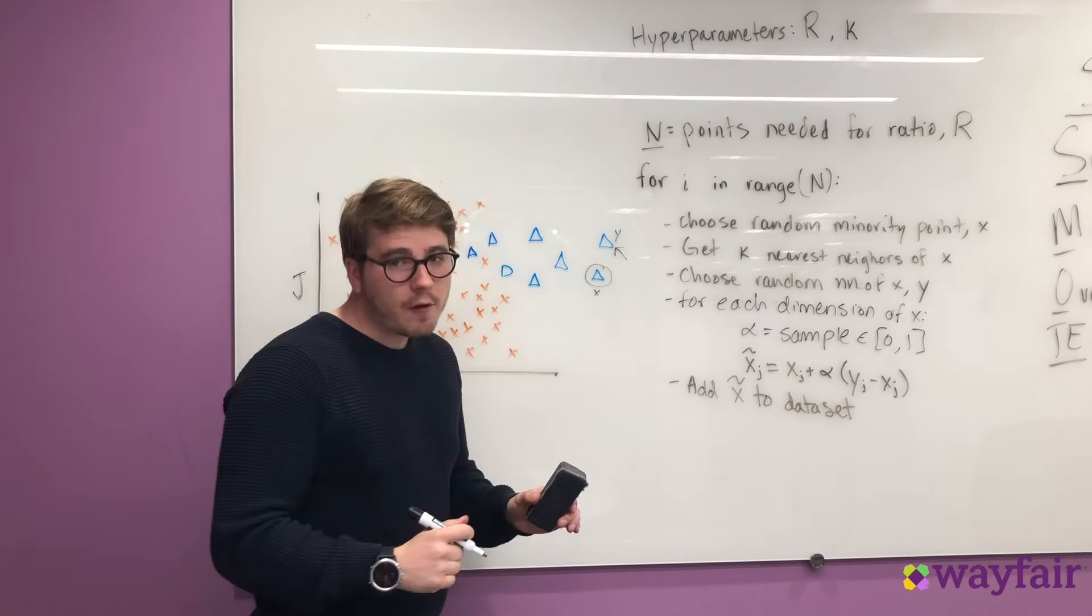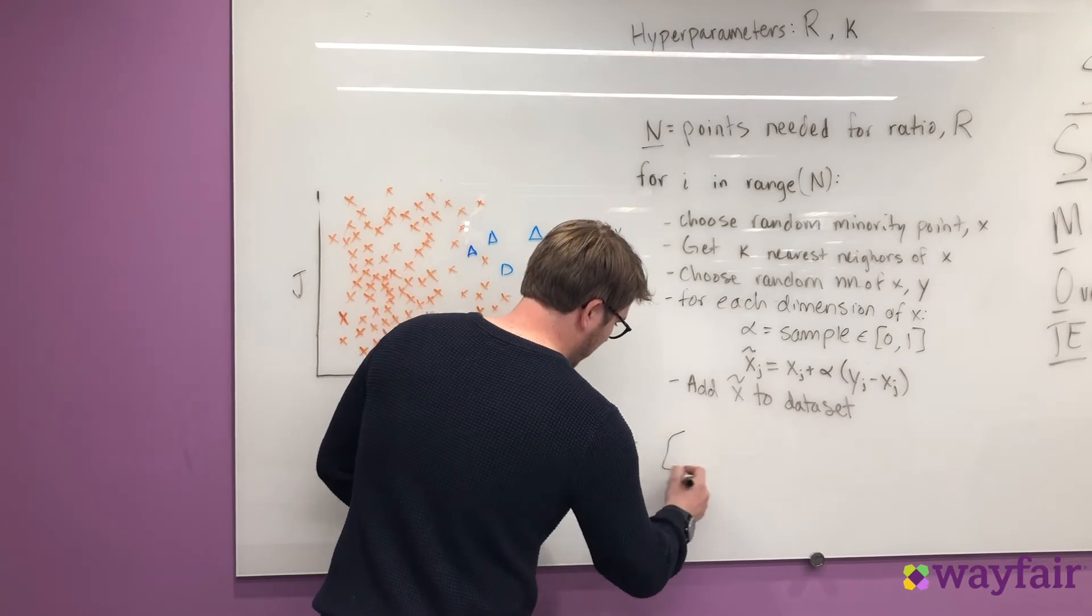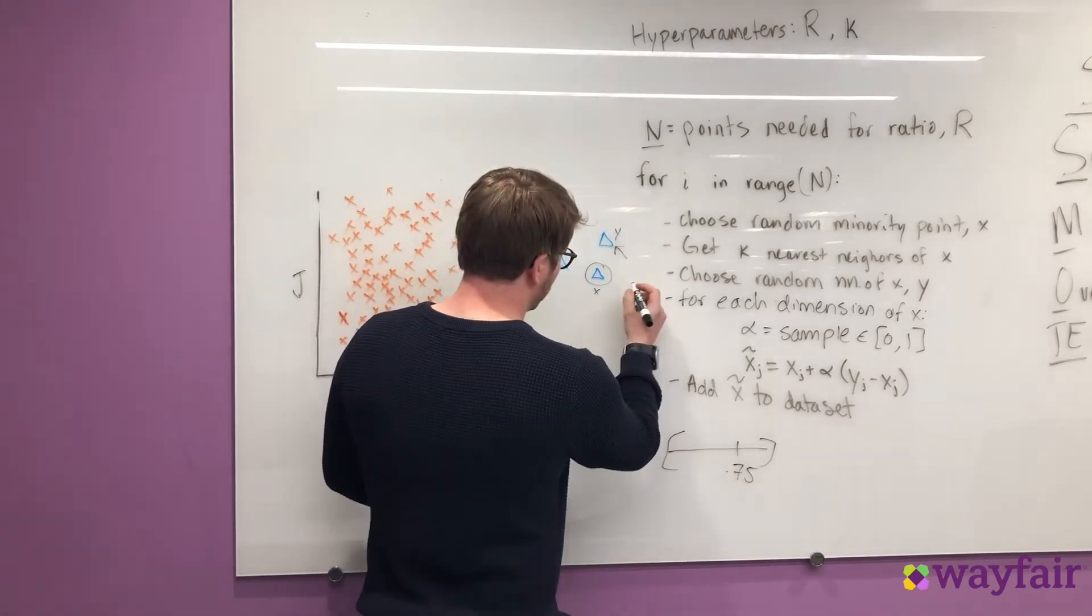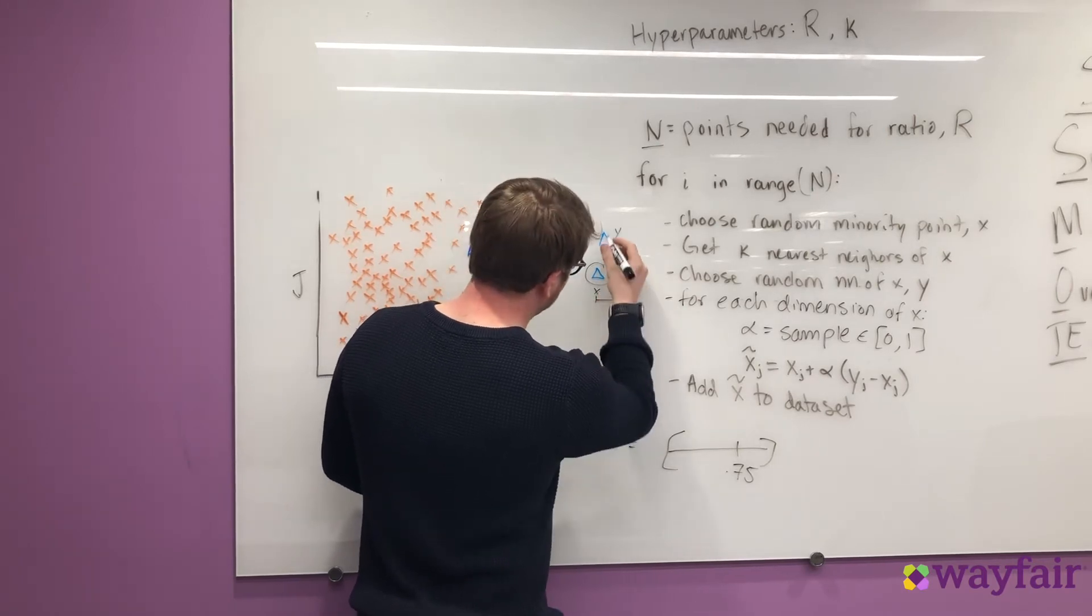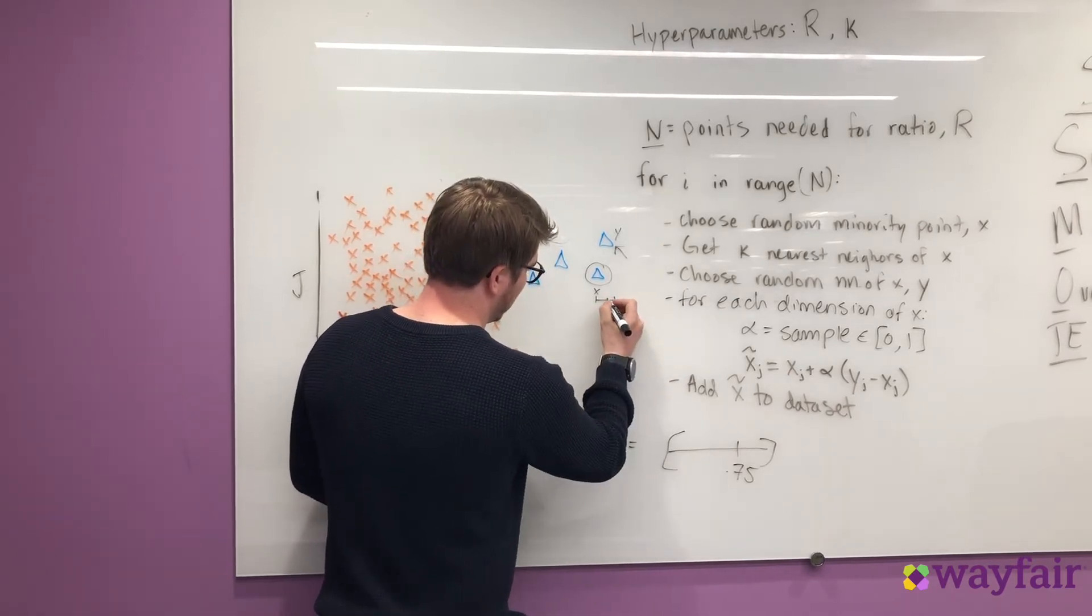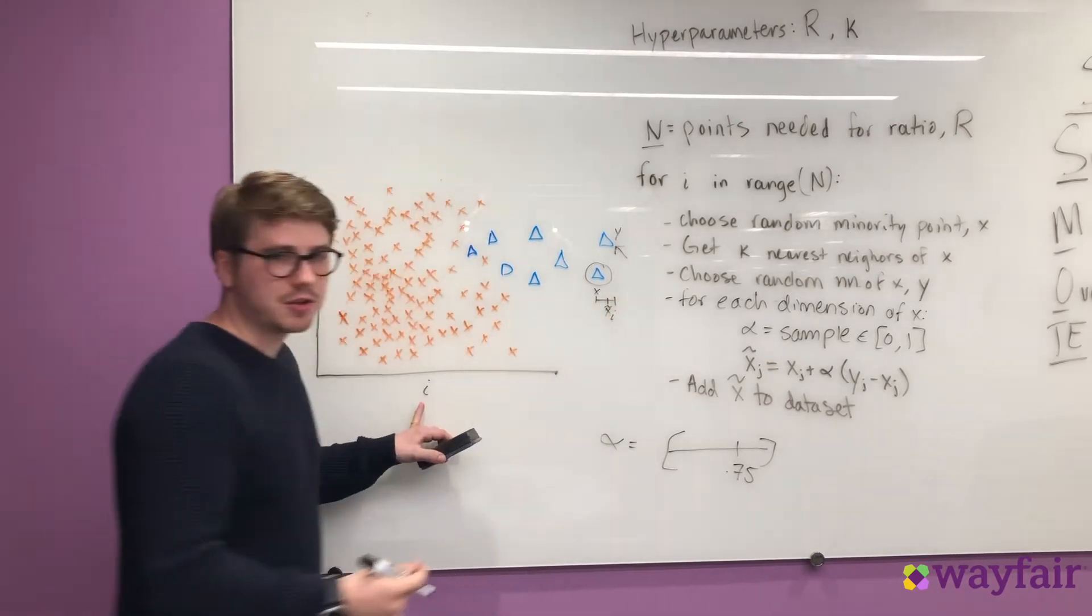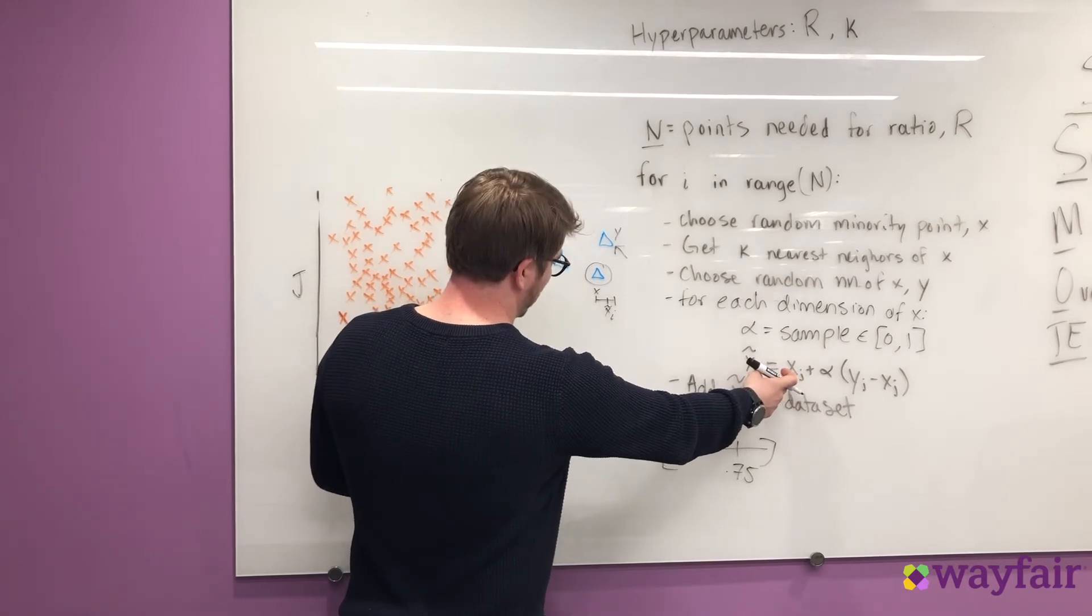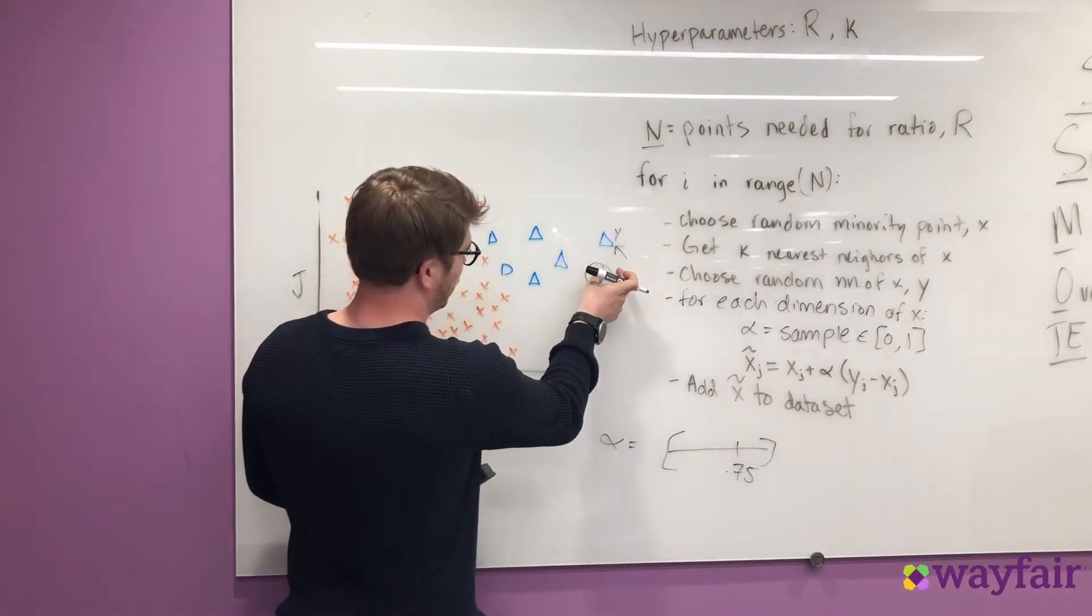What we're going to do is sample a value alpha in the uniform distribution between 0 and 1. So maybe we get 0.75 as our first alpha value. And then we're going to create our new synthetic point by taking the distance between our X and Y and then getting alpha percent of that. So here is our new point, X i tilde. This is the i dimension of that. And how we got that was we just took the i dimension of our X point, and then we added alpha times the distance between these two points.